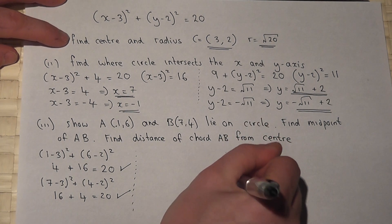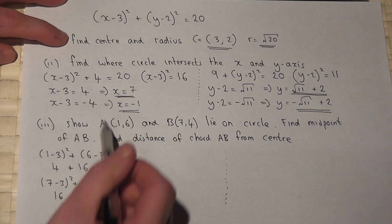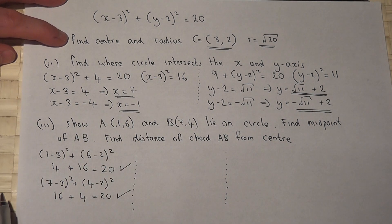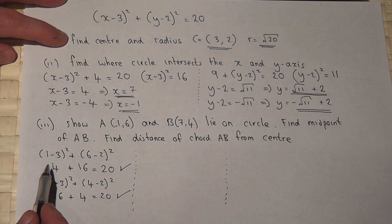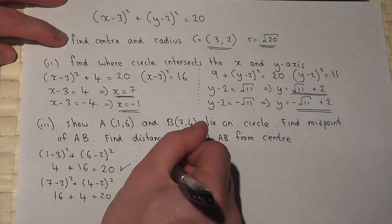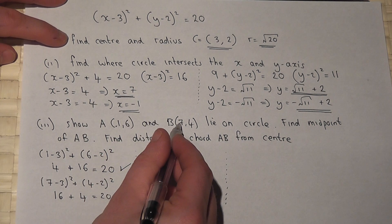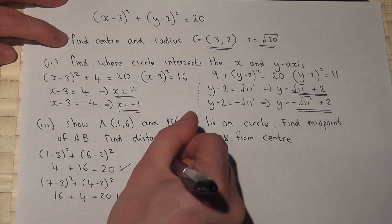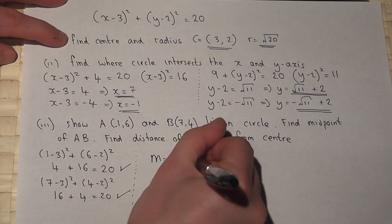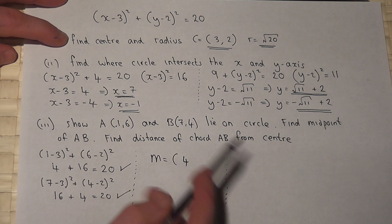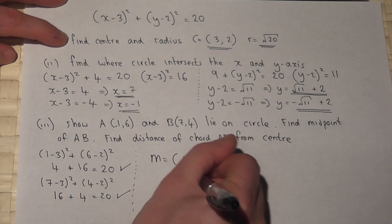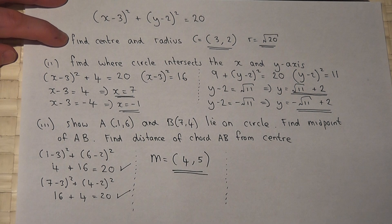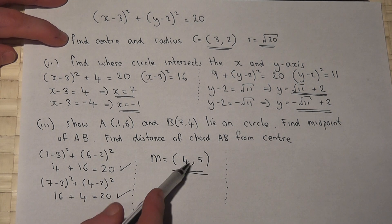To find the midpoint of these two coordinates, I need to find the average of the x-coordinate and the average of the y-coordinate. So 1+7 is 8, halve it is 4. And 6+4 is 10, halve it is 5. So the midpoint between A and B is the coordinate (4, 5).